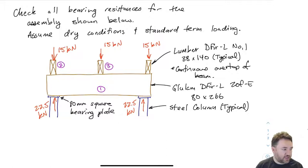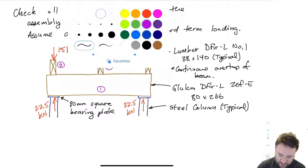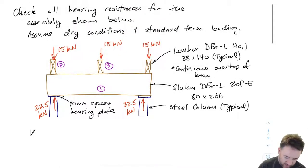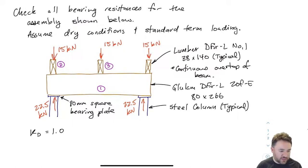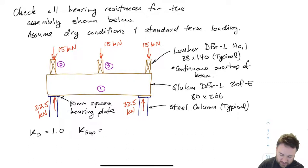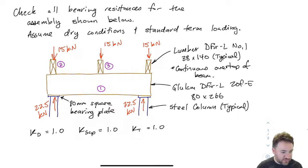We're assuming dry conditions and standard term loading, which will reduce our work somewhat. Therefore KD equals 1.0 — that's the standard duration loading factor. KSCP, the service condition factor for bearing compression perpendicular, is 1.0. And KT, the treatment factor, is also 1.0.